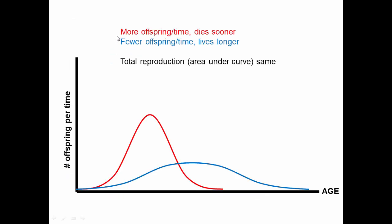Thinking about rotifers and reproductive value, there seem to be potentially two different strategies. An individual may have more offspring per unit time but won't live as long and will die sooner. Versus other organisms that have fewer offspring per time but live longer — per year they're having less, but they have it for more years. Which strategy generates the highest fitness? You can figure this out by integrating the area under the curve. In this course, we'll treat it as a dichotomy: lots of reproduction with shorter lifespan versus lower reproduction with longer lifespan — two strategies that may yield roughly equivalent fitness.